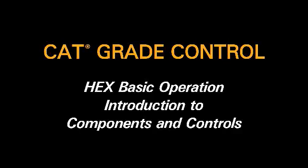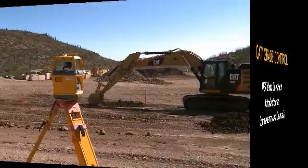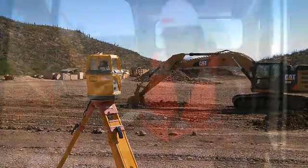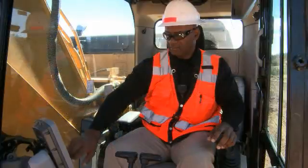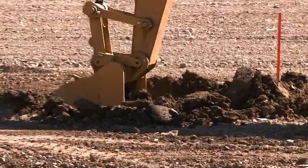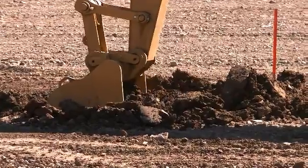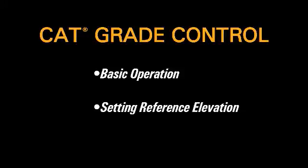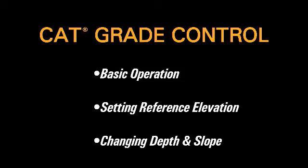CAT Grade Control for Hydraulic Excavators provides the operator with an in-cab reference for distance to grade and controls to set depth and slopes for excavation. This video will demonstrate basic operation, setting the reference elevation, and changing depth and slope features.